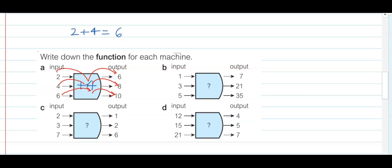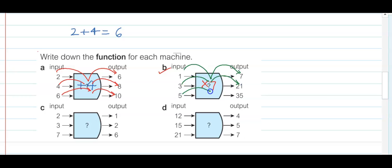For part B, the answer is times 7. Let's cross-check: 1 times 7 is 7 — it is working. 3 times 7 is 21 — it is working. And 5 times 7 is 35 — it is working. That is fine.